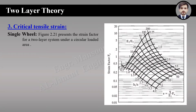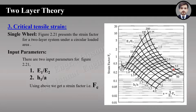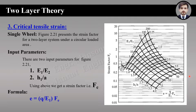First we are going to discuss it for a single wheel, for which our reference figure is 2.21, having two input parameters: one is the modulus ratio E1 by E2, and the second is H1 by A. From these two input parameters we get a factor called the strain factor. The formula is: critical tensile strain equals Q divided by E1, multiplied by the strain factor.